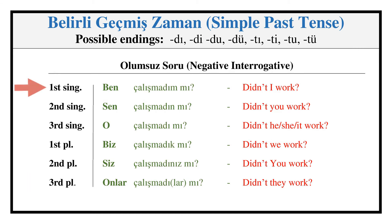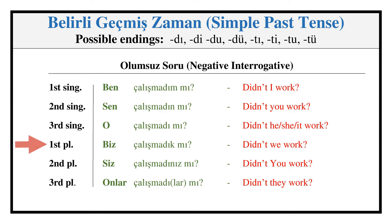Simple Past — Interrogative / Negative Interrogative: ÇALIŞMADIM MI, ÇALIŞMADIN MI, ÇALIŞMADI MI, ÇALIŞMADIK MI, ÇALIŞMADINIZ MI, ÇALIŞMADILER MI?